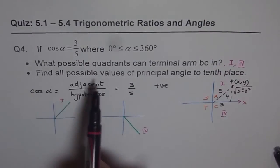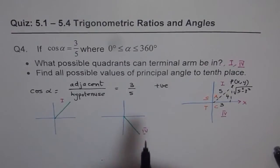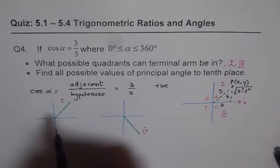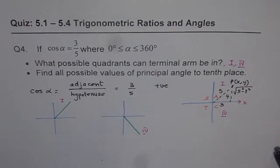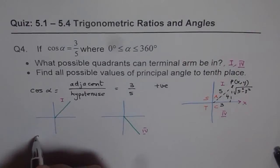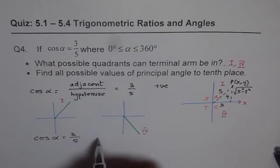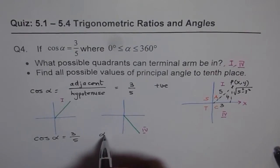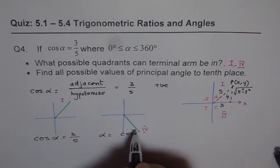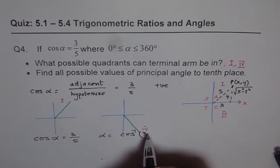Now the second one is, find all possible values of principal angle. So to find the possible angles, let's first find the angle, right? So how to find the angle? If we know cosine alpha is equal to 3 over 5, then alpha is equal to cosine inverse of 3 over 5, correct?